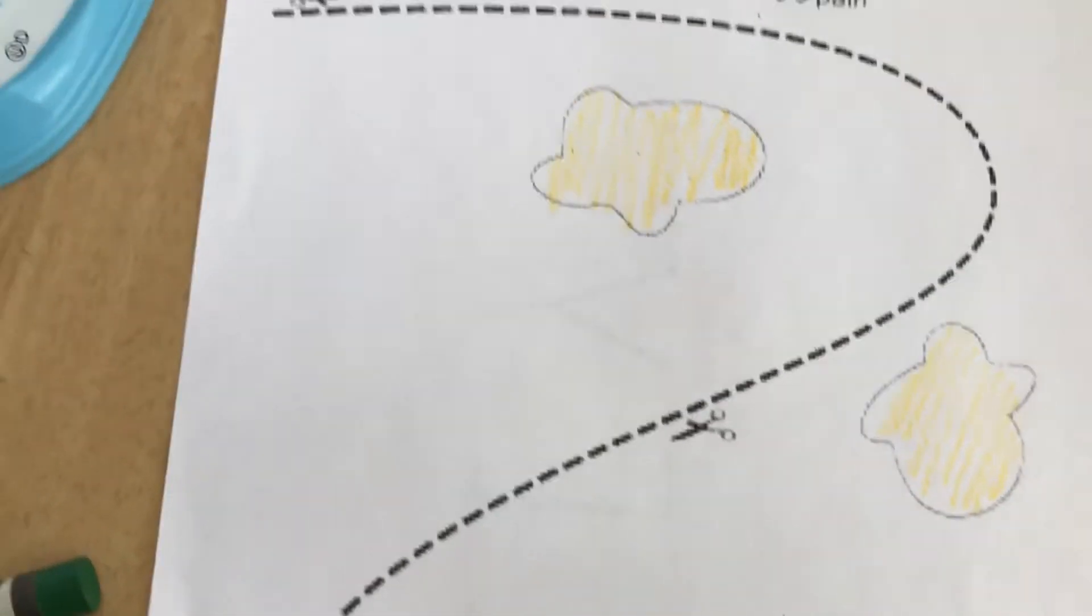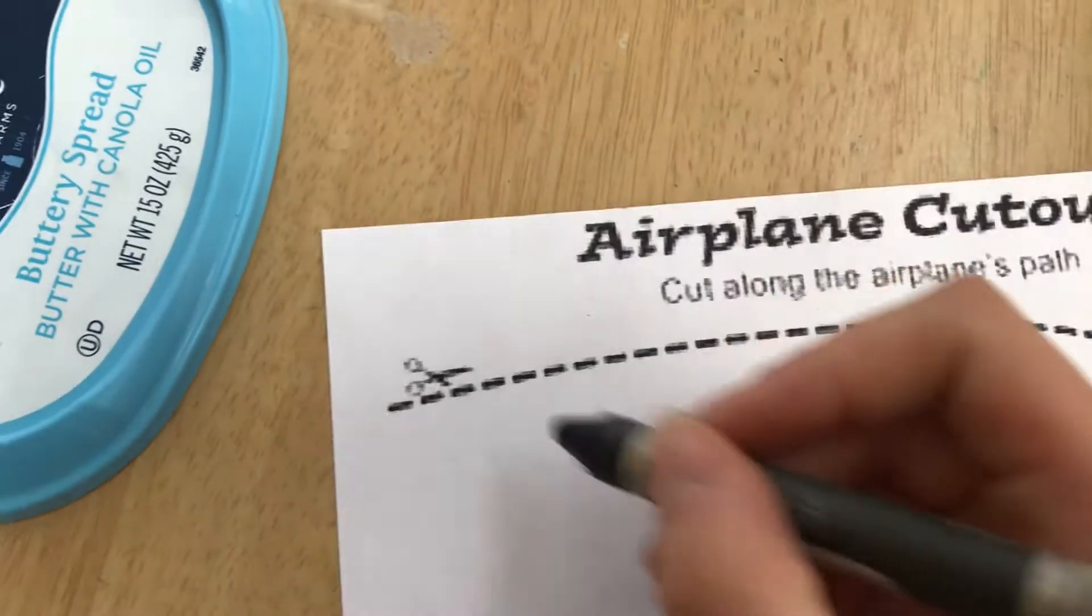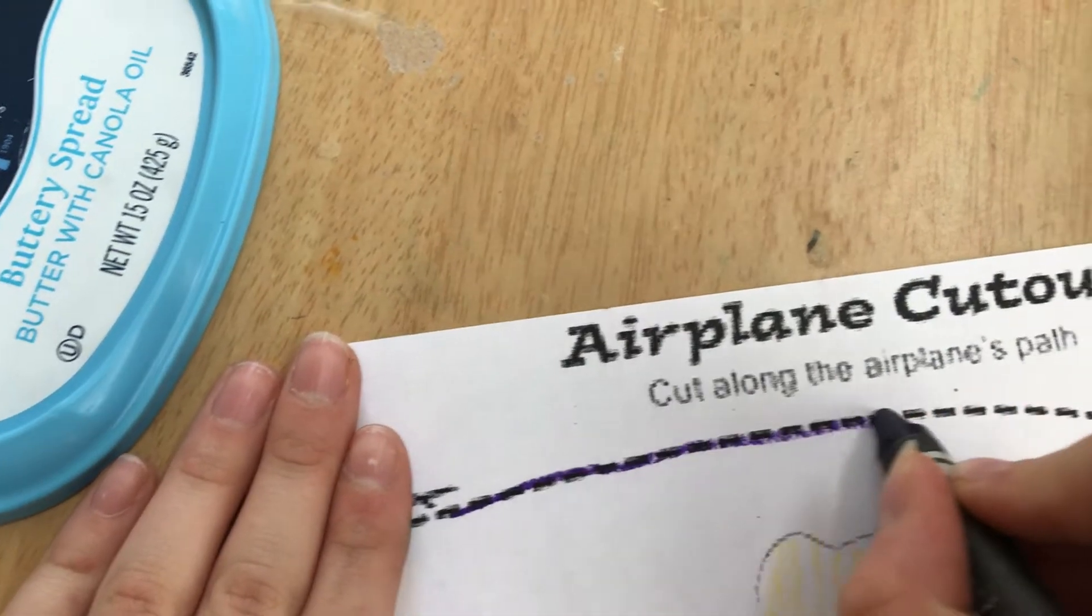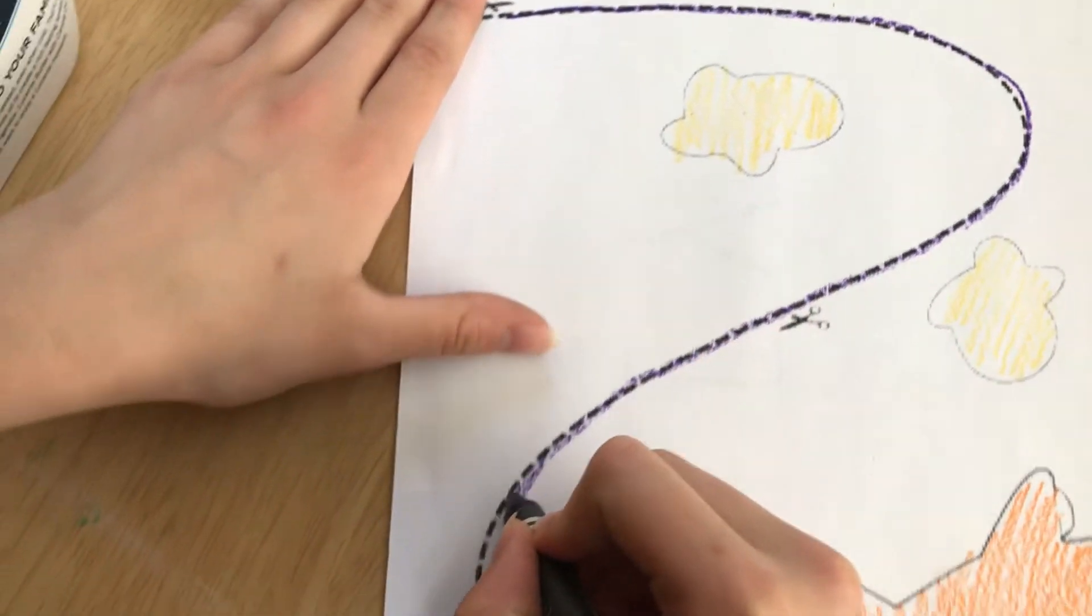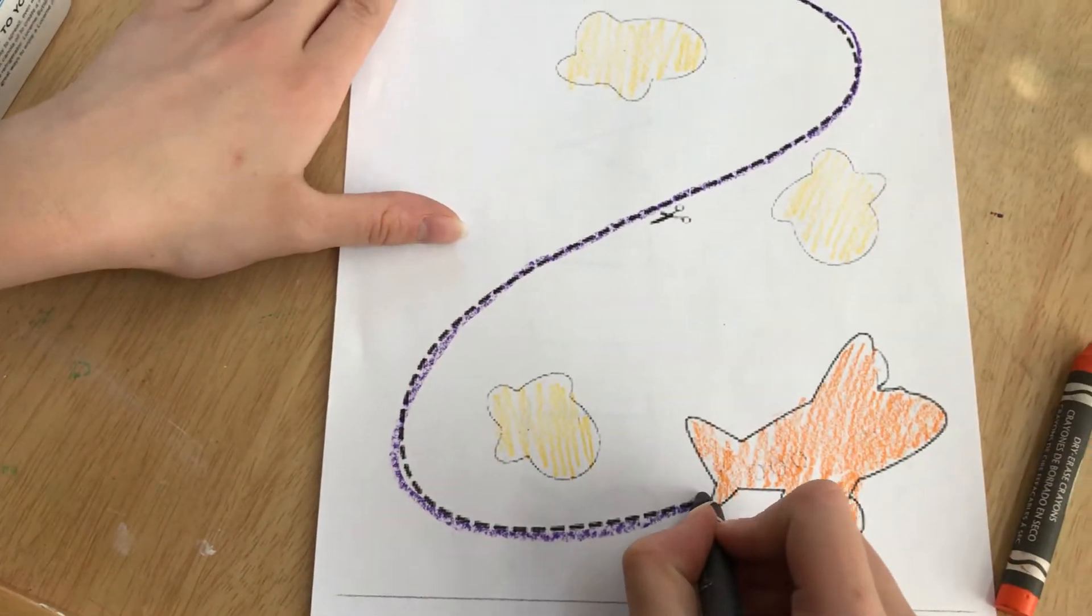And then I'm going to trace on the line. Remember we need to use two hands. One to hold the paper down and then one to hold the crayon. And then stop when you get to the airplane.